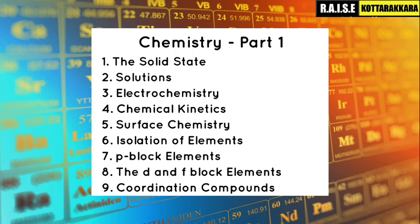The fifth chapter is Surface Chemistry. The sixth chapter is Metallurgy — it is called the General Principles of the Process of Isolation of Elements, normally referred to as metallurgy.